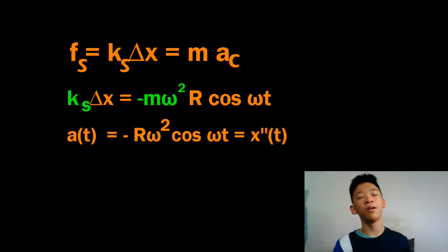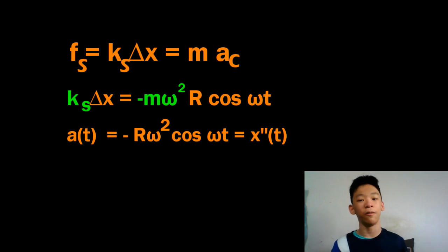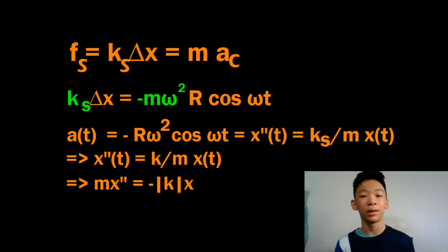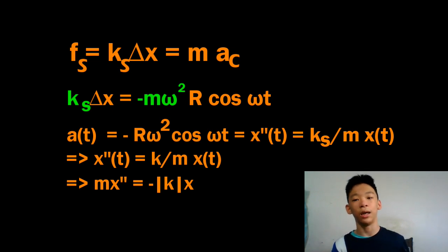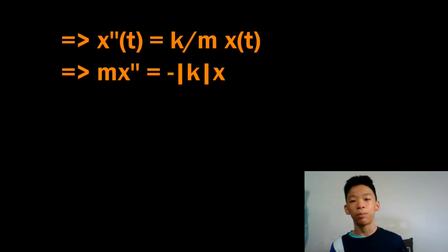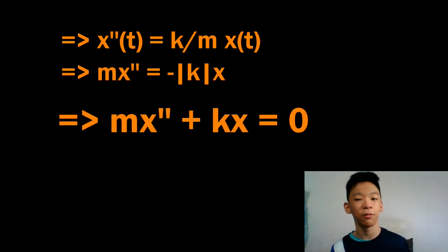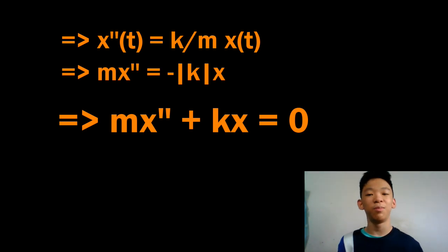Because the acceleration is the second derivative of position with respect to time, the net force is m times x double prime, which equals negative kx. Moving negative kx to the left gives us mx'' plus kx equals 0. We have derived Newton's spring differential equation.